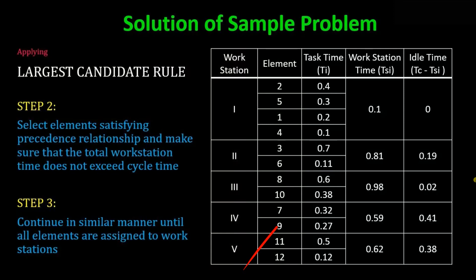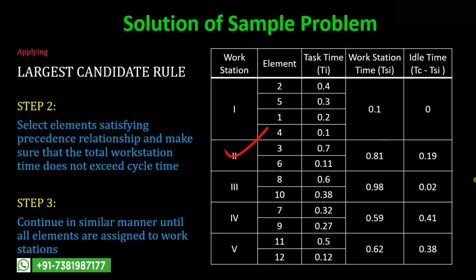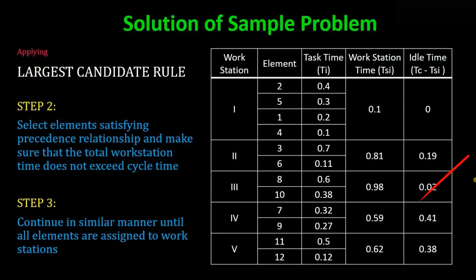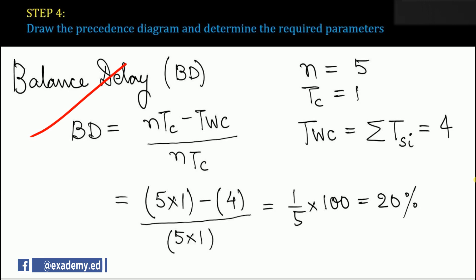We end up with five workstations total. The workstation times are: WS1 = 1.0, WS2 = 0.81, WS3 = 0.98, WS4 = 0.59, WS5 = 0.62. The idle times (cycle time minus workstation time) are: 0, 0.19, 0.02, 0.41, and 0.38 respectively.